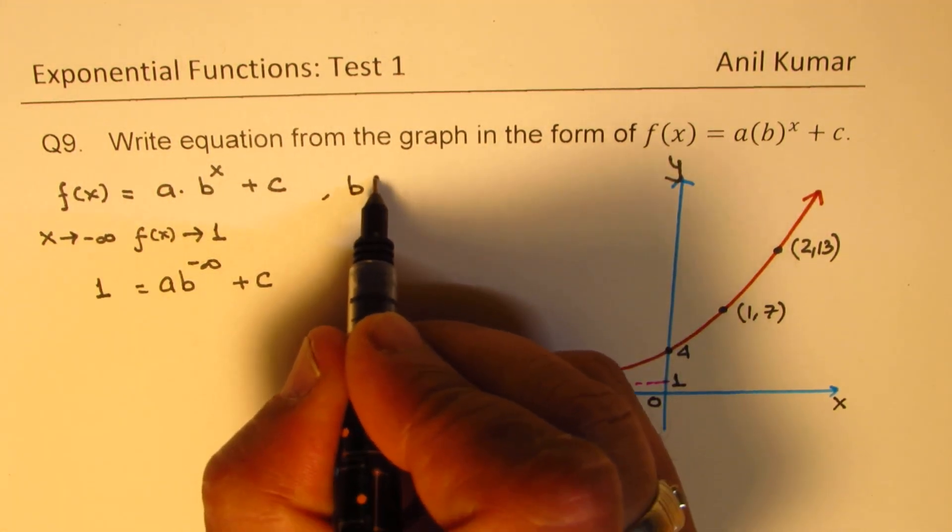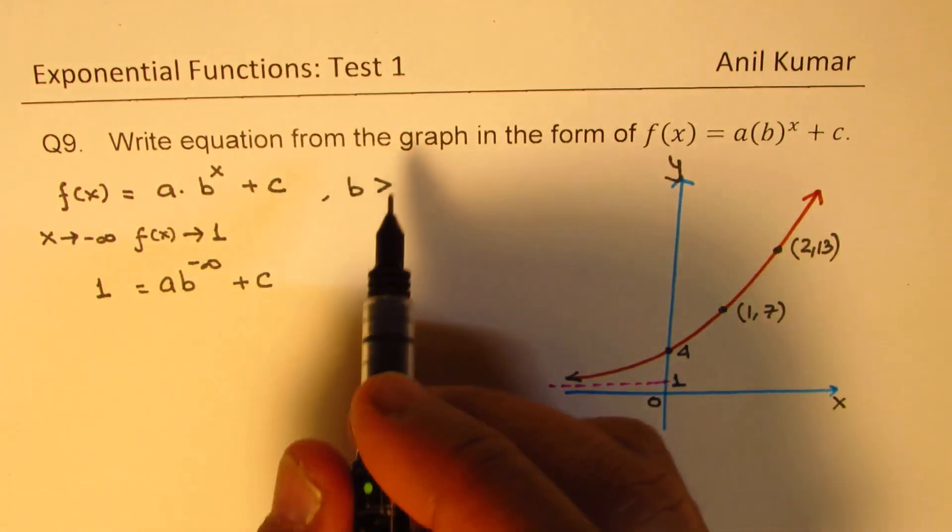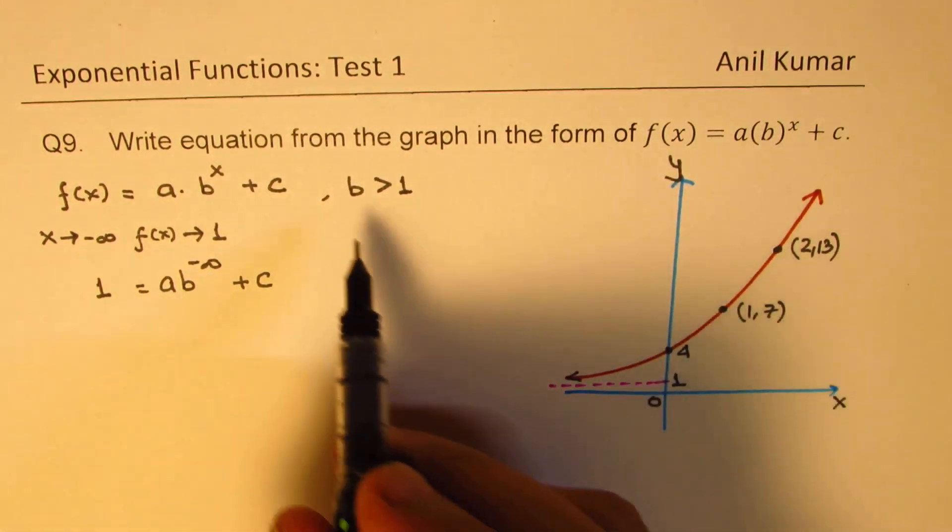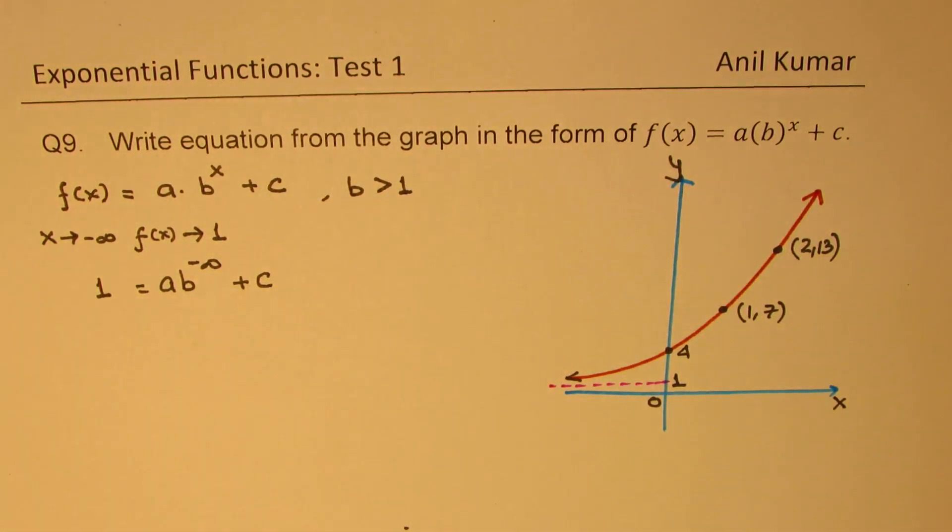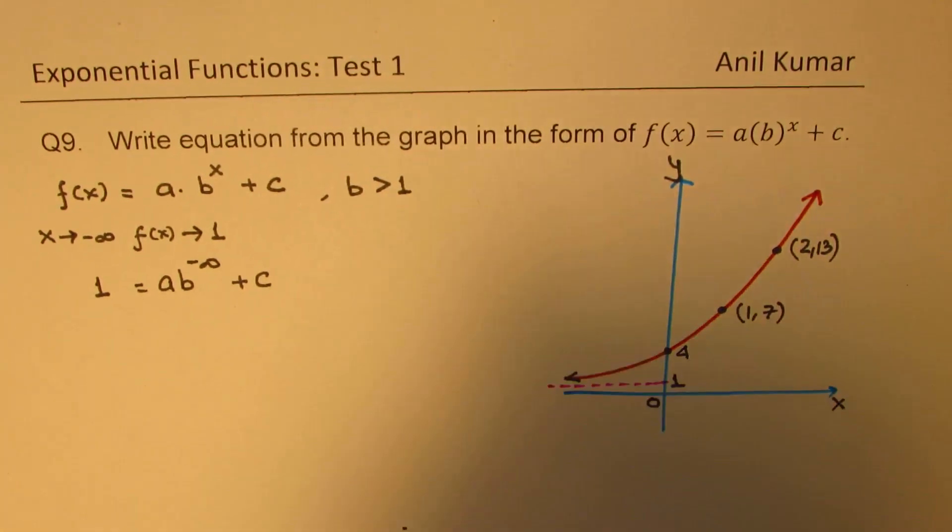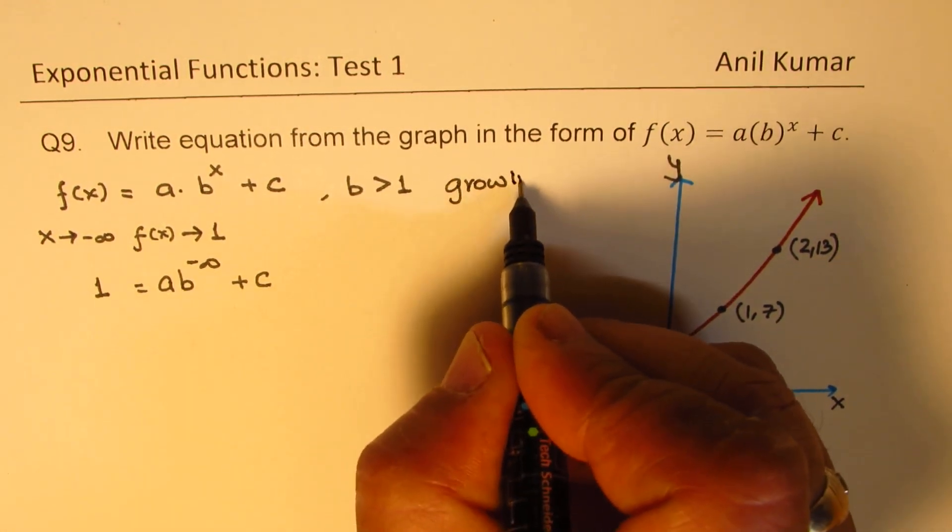We know b has to be greater than, well, we'll assume b to be greater than 1, okay? So we are assuming b greater than 1. Well, b could also be within 0 to 1, since it is growth, right? Growing function. So growth.